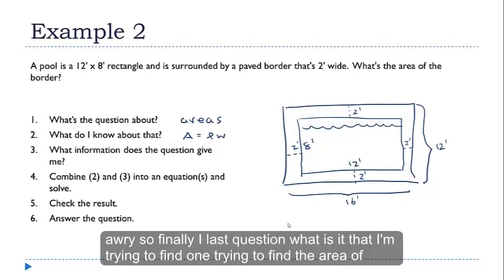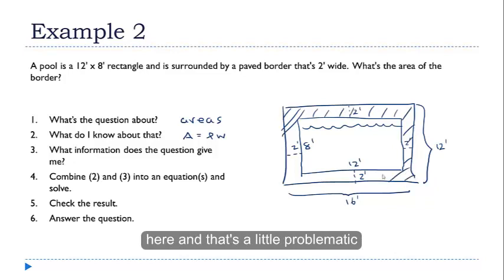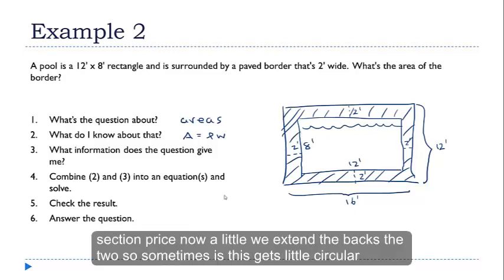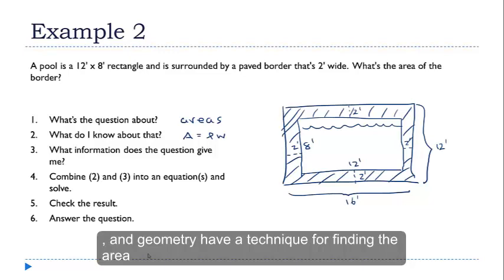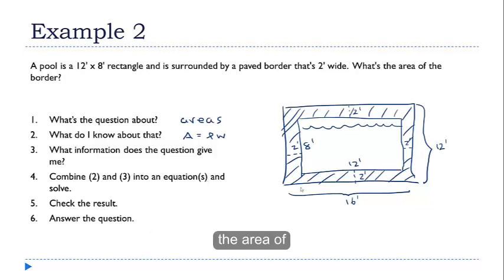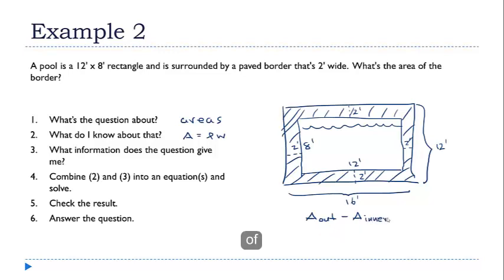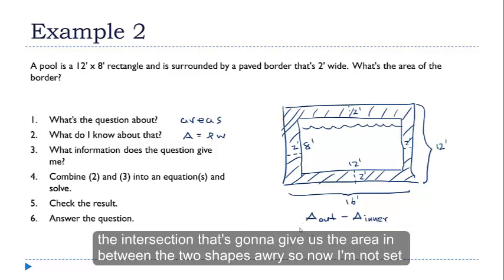So finally, last question. What is it that I'm trying to find? Well, I'm trying to find the area of this section here. And that's a little problematic. I don't have a formula for this kind of strange section. So now we have to kind of go back to step two. Sometimes this gets a little circular. In geometry, we have a technique for finding the area between two shapes, between these two rectangles. So the way we do that is we take the area of the outer section and we subtract out the area of the intersection. And that's going to give us the area in between the two shapes.